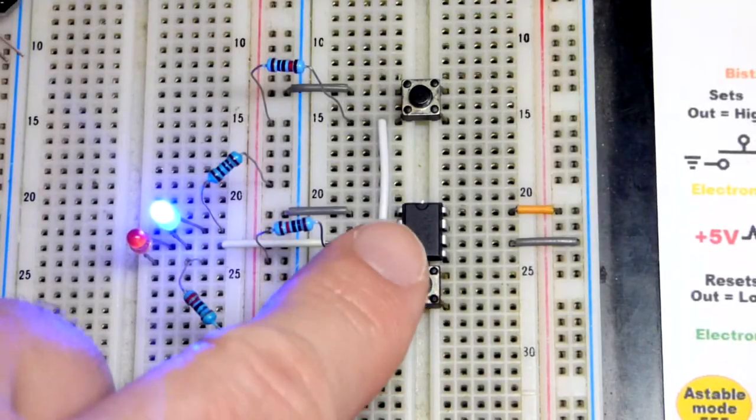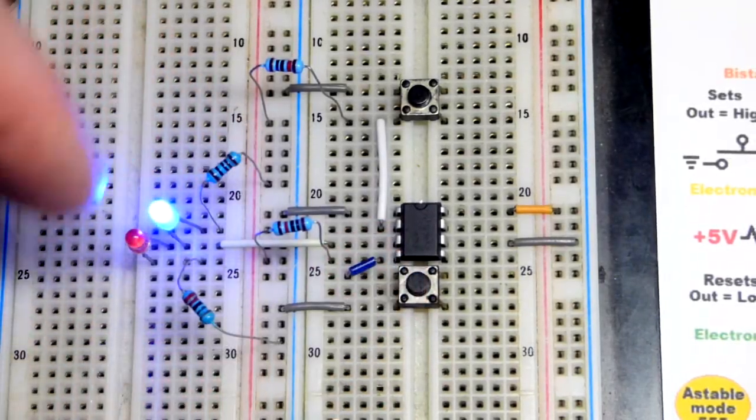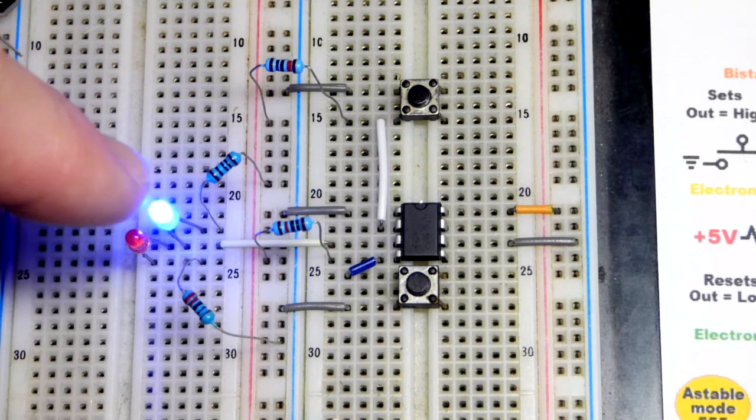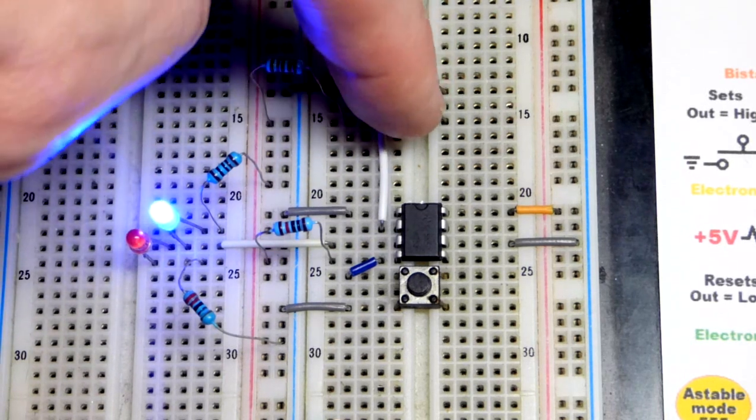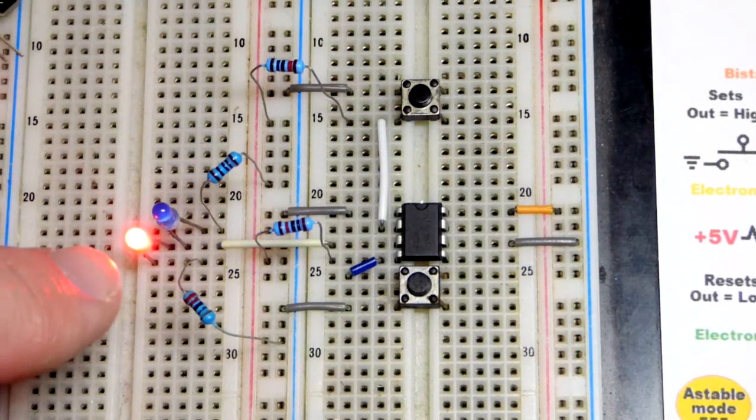So now in this video we're going to use a 555 timer integrated circuit. It's wired in bistable mode right now. The output is going to stay low until I press the button that goes to the trigger pin right there.